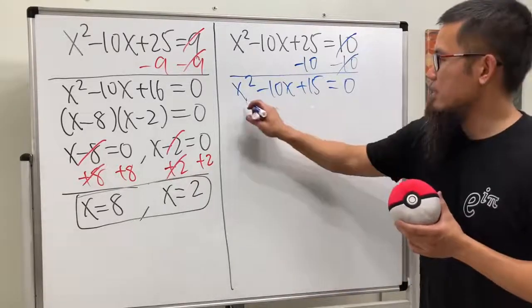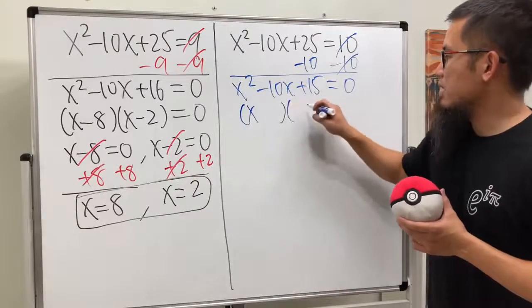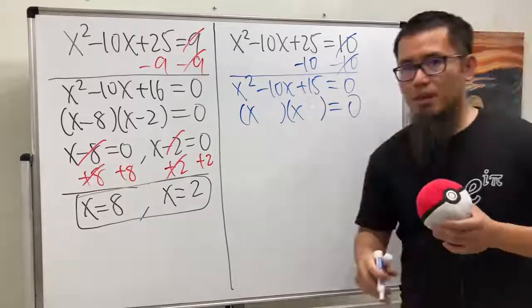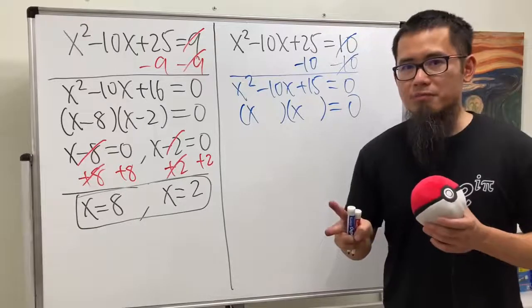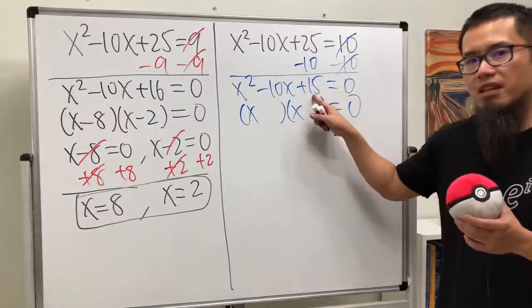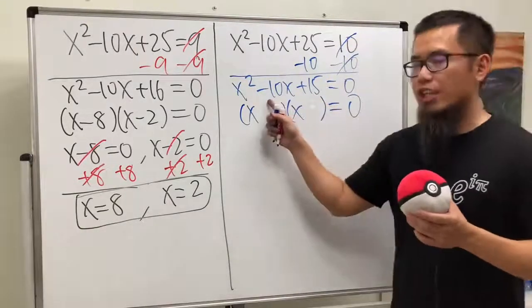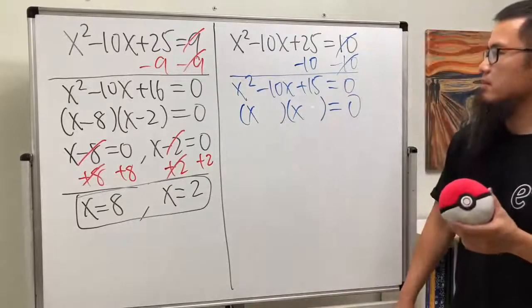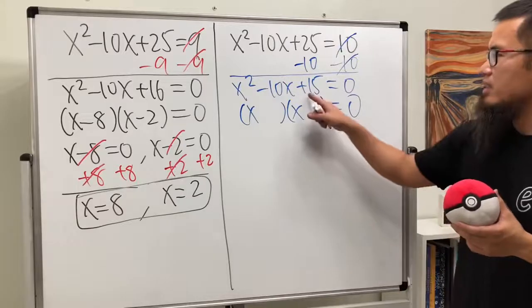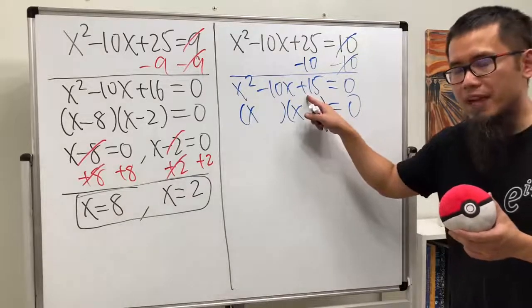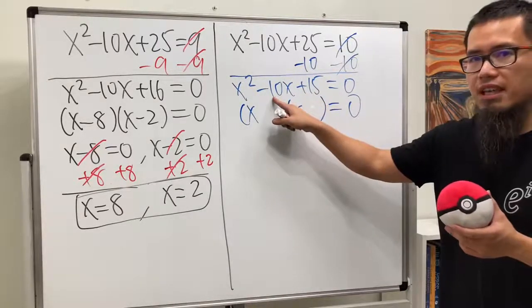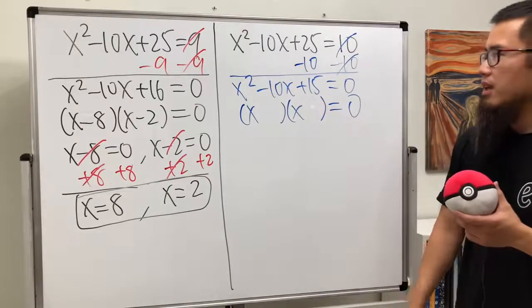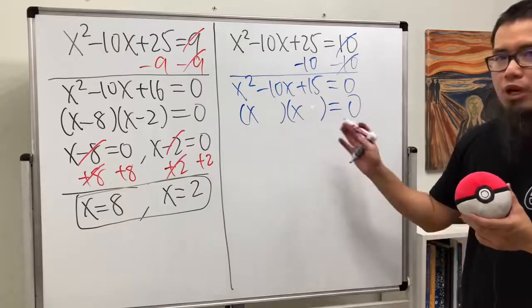So, let's try to factor it. x gives us x squared. Okay. But now, can we think about two numbers? They multiply to be positive 15. Together, they add up to be negative 10. I don't think so, because we can do negative 3 and negative 5, but that's not going to give us negative 10. Negative 1 and negative 15? No. So, we have some trouble here.